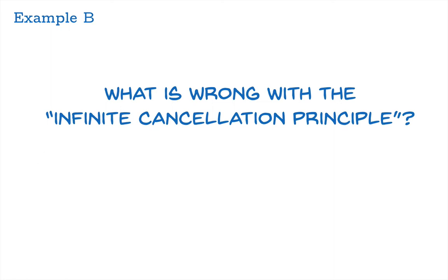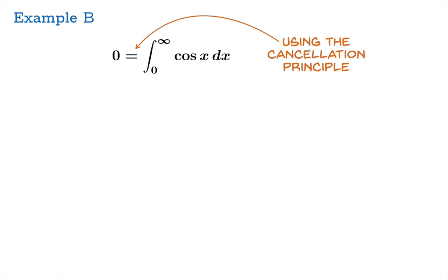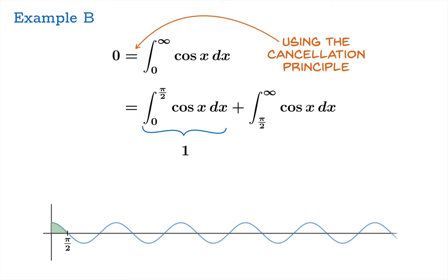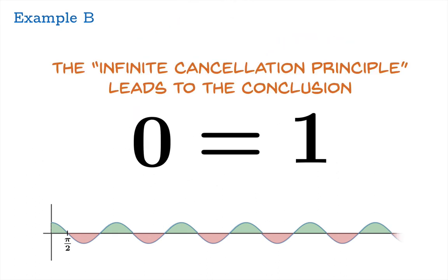You might object: what's wrong with the infinite cancellation principle? Surely there's no harm in declaring that area to be 0 since all those parts cancel. But this can lead to trouble. If you imagine this integral equals 0 using the cancellation principle, you could split it from 0 to π/2 and then from π/2 to infinity. The first piece equals 1 — easily calculated. The infinite cancellation law then seems to say the remaining integral from π/2 to infinity should be 0, giving 0 equals 1. Once you've proved a contradiction, you can prove anything. The infinite cancellation principle is actually wrong.